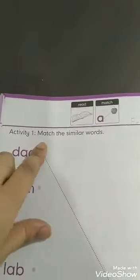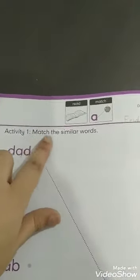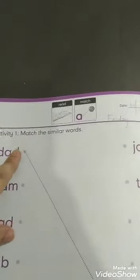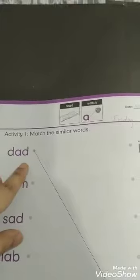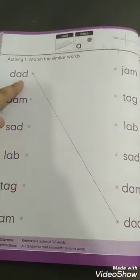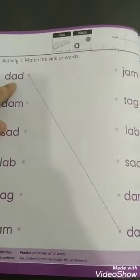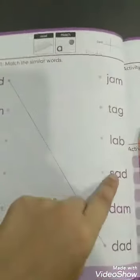Then we will read the statement - Activity 1: Match the similar words. What is meant by similar words? Similar words kone se hoti hai? Jo ek jaise words ho. Here there are two columns - first column and second column.